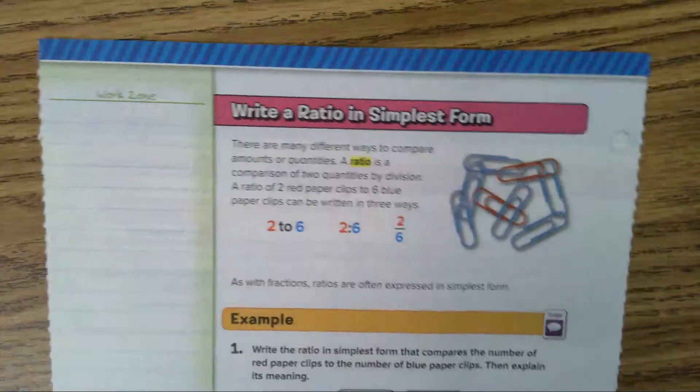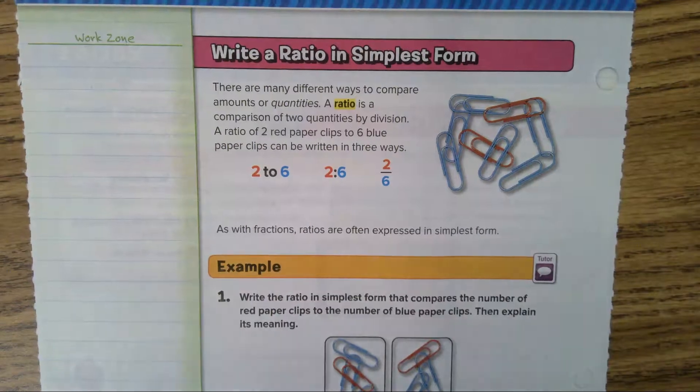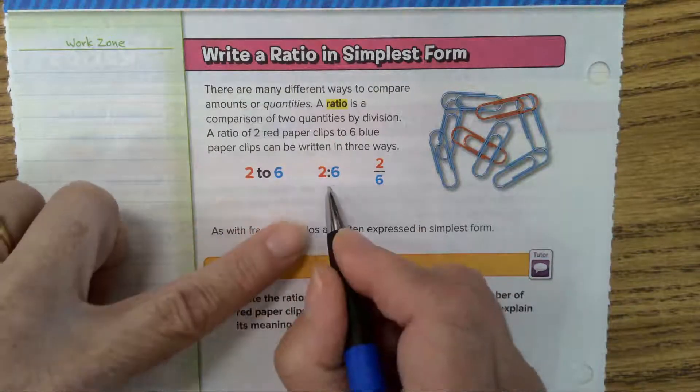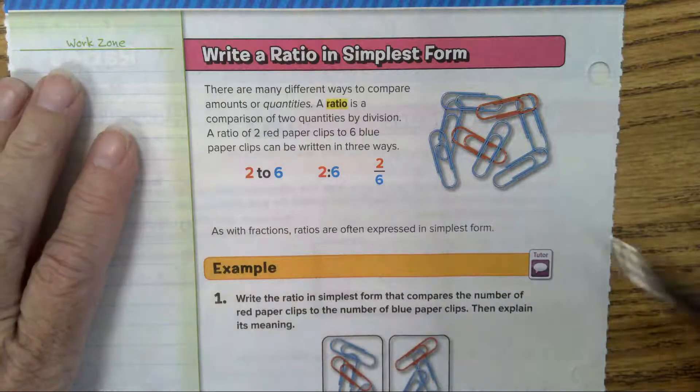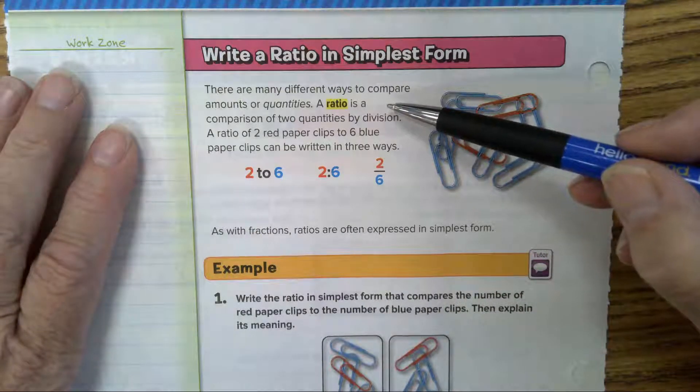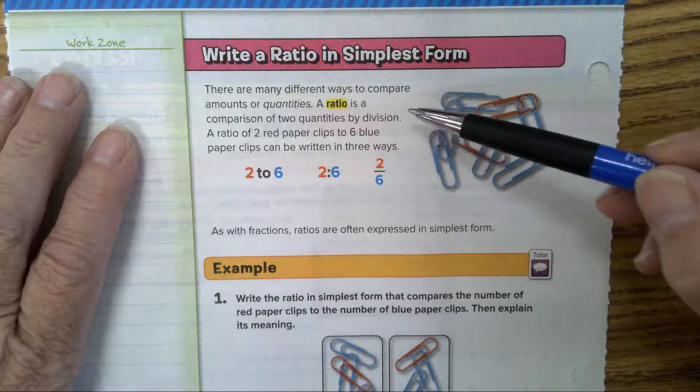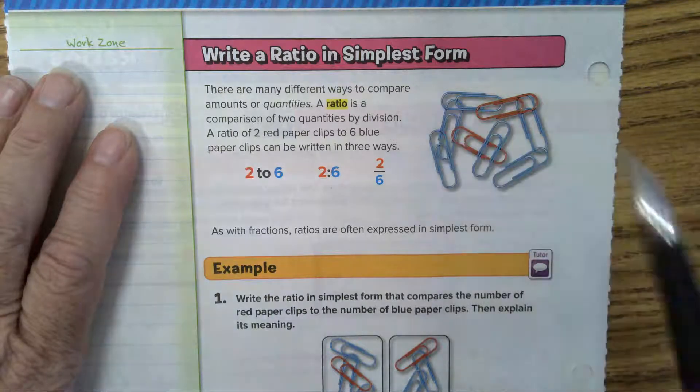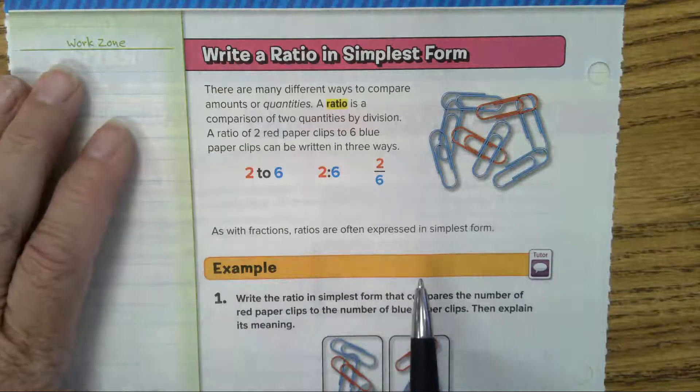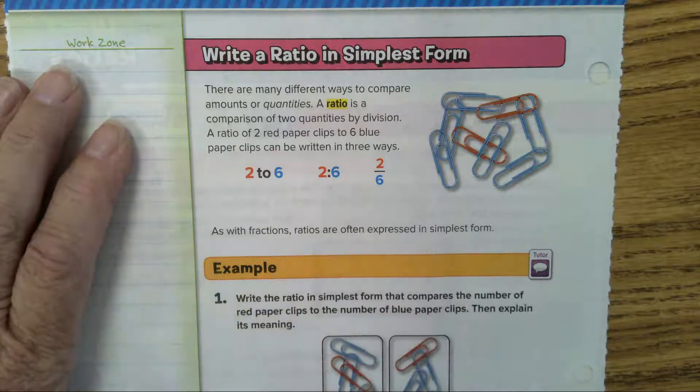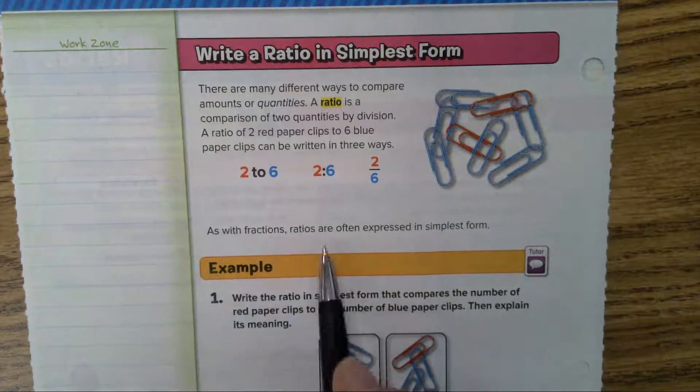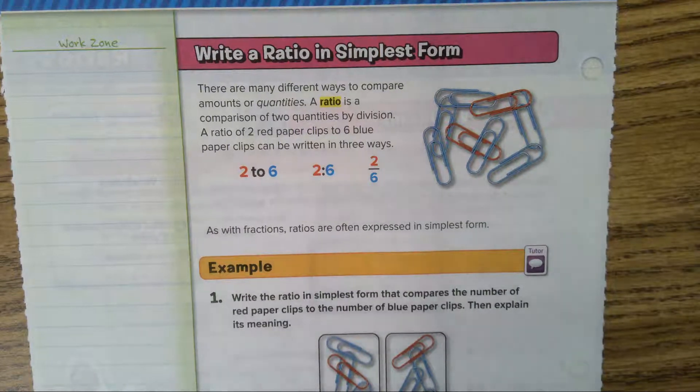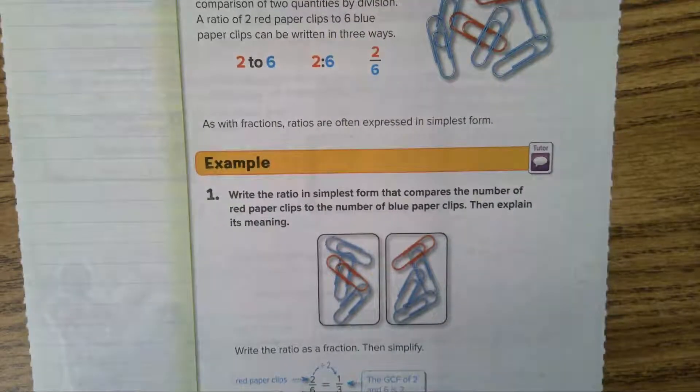Now let's turn to page 20 and we're going to talk about how to write a ratio in simplest form. Boys and girls, there are three ways to write ratios: the TO, the colon, and a fraction. A ratio is a comparison of two quantities by division.